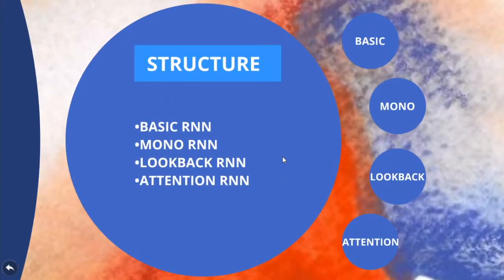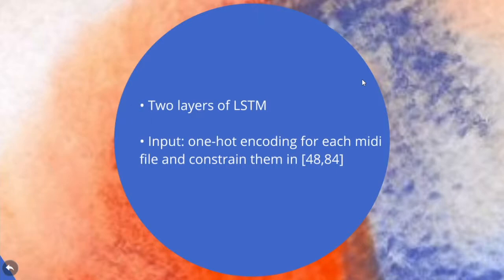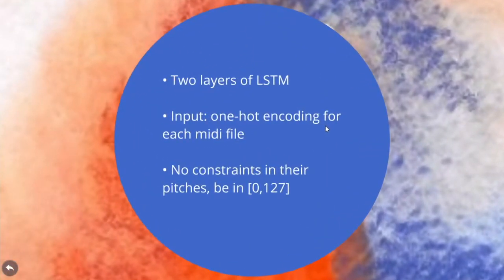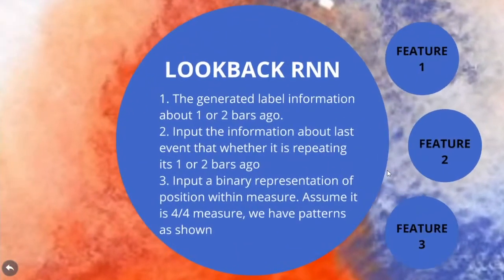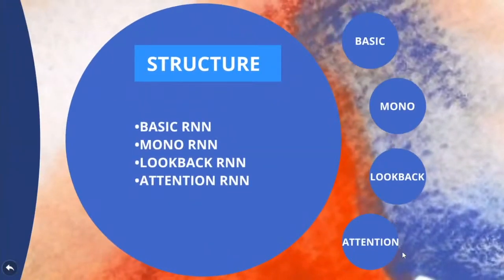We try four models in MelodyRNN: BasicRNN, MonoRNN, LookBackRNN, and AttentionRNN. BasicRNN and MonoRNN are very similar to each other; they both use one-hot encoding to extract MIDI files. But BasicRNN applies constraints so the pitch of the MIDI file is in range 48 to 84, while MonoRNN applies no constraints and uses the whole pitch range. LookBackRNN adds additional information for 1 or 2 bars ago, including whether the last event is repeating 1 or 2 bars ago, and Risen Patterns, which map a unique number to a specific pattern. This information can easily repeat the patterns.